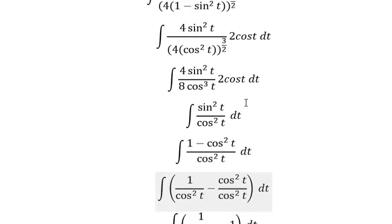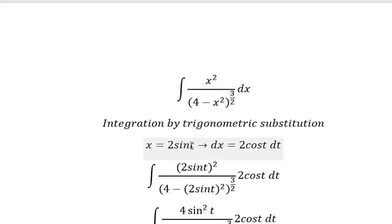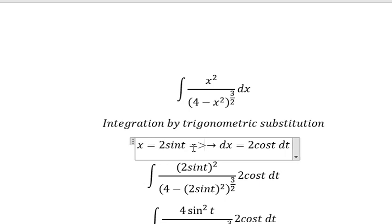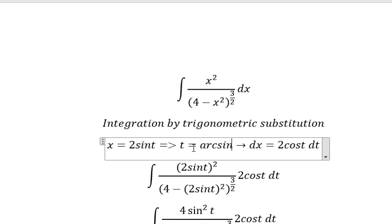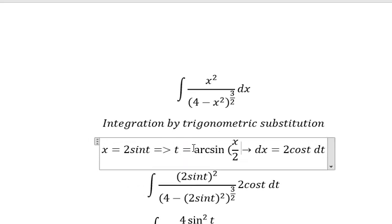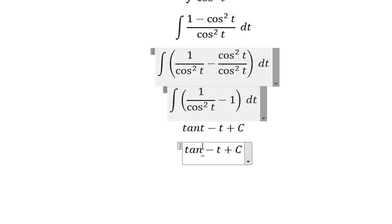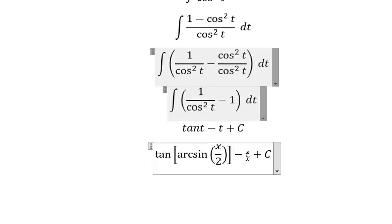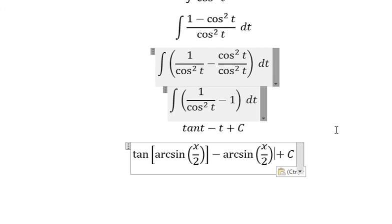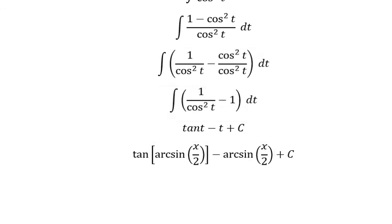For t, we need to go back to our original substitution. We divide both sides by 2 and get t equals arcsine of x over 2. So we substitute this back in. This is the end, thank you for watching.